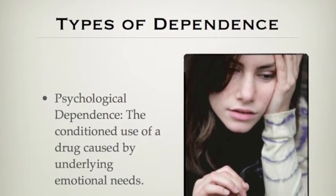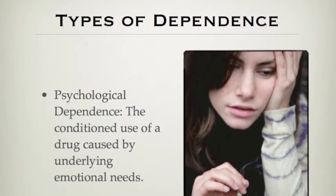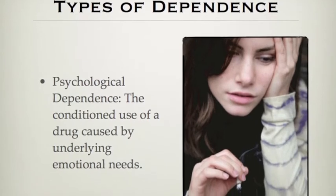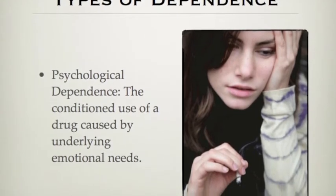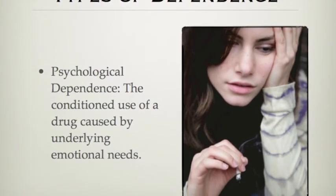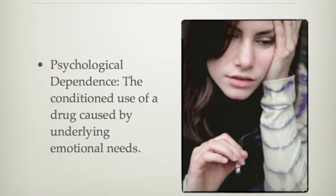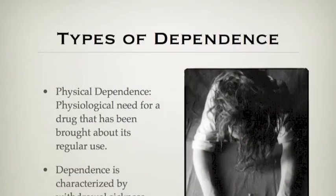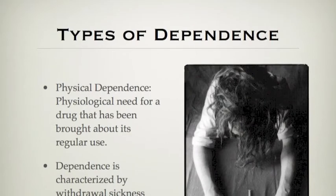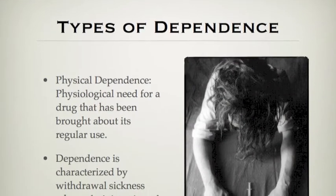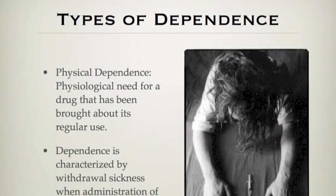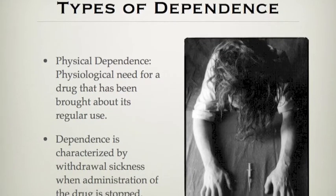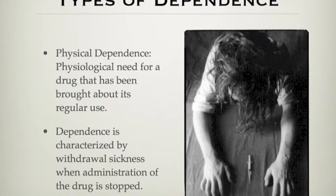There are two types of dependence. The first, psychological dependence, is the compulsive use of a drug caused by underlying emotional needs. Physical dependence is the physiological need for a drug that has been brought on by its regular use, characterized by withdrawal sickness when administration of the drug is stopped.